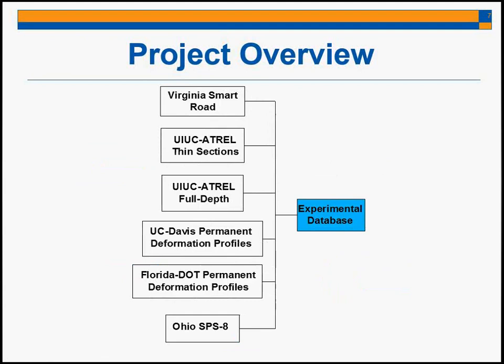Regarding the experimental database, the project participants made a database of measurements available to us for validation. It is composed of the Virginia Smart Road data and the pavement sections built here in our testing facility, including full-depth sections and thin sections. From UC Davis and the Florida DOT, we have measurements of permanent deformation profiles. And finally, the Ohio SPSA sections, which measured the shear strength for each of the two tire types. All this data uses dual-tire assembly and wide-based tires, though not always the same type of tire or instrumentation, so there is some variation.